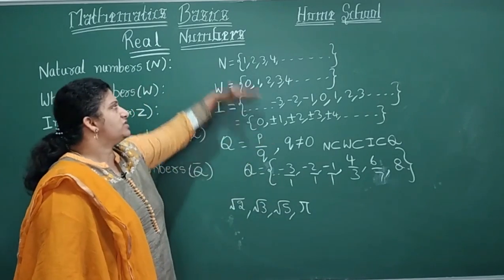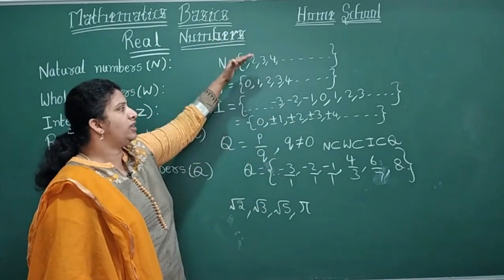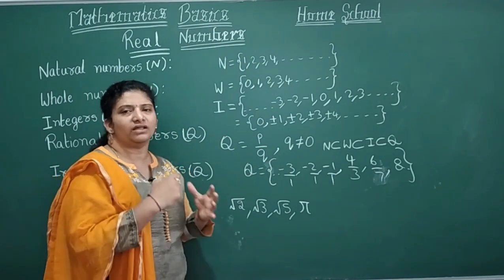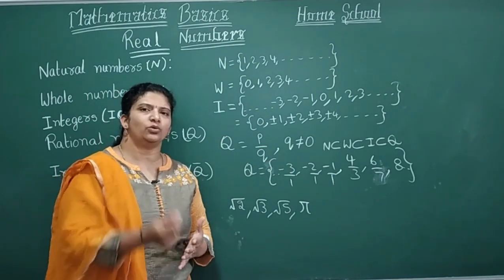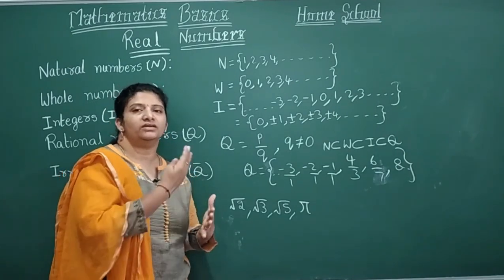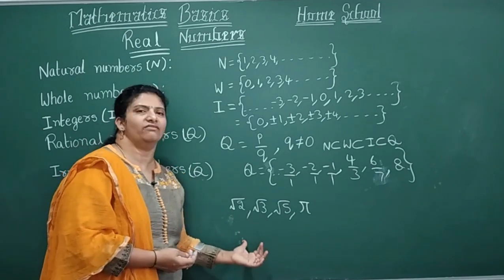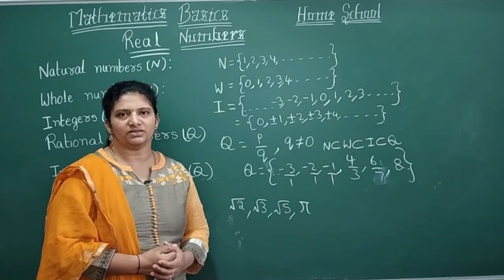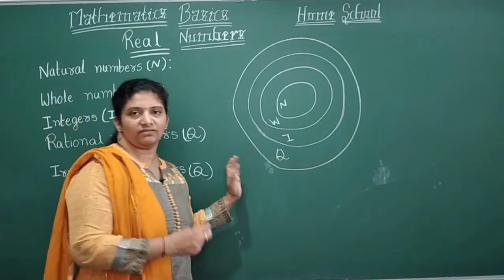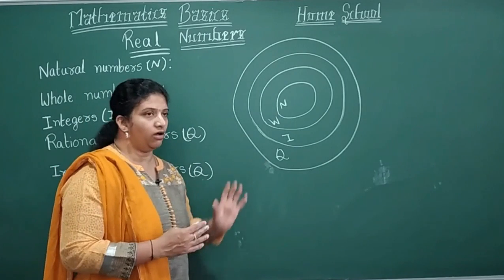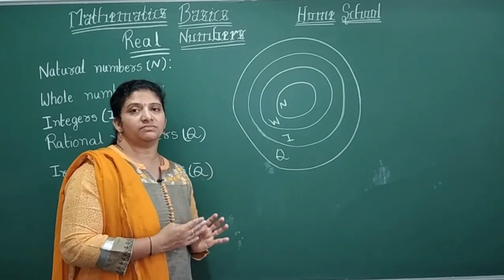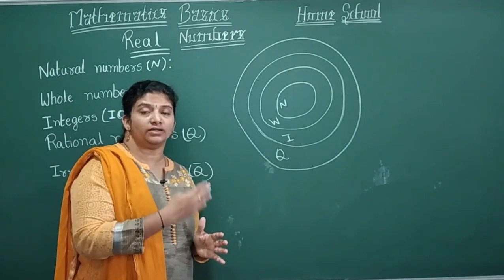All the numbers we can express in the form P by Q are rational — if a number has no denominator, we divide by 1. Other than these, we have irrational numbers, which appear in the form of square roots. Now let's look at how these numbers relate to each other as subsets.